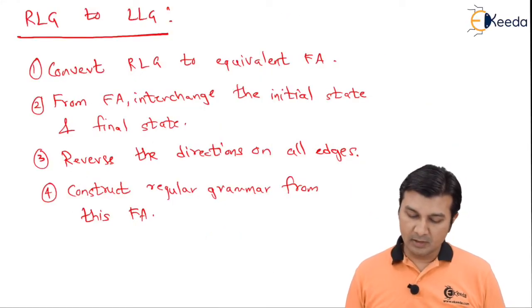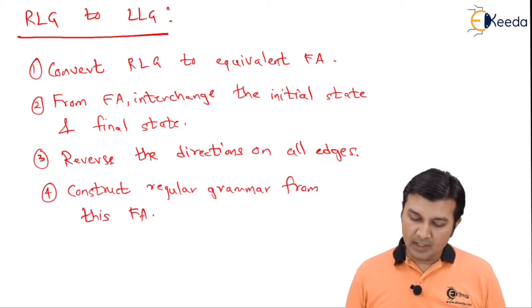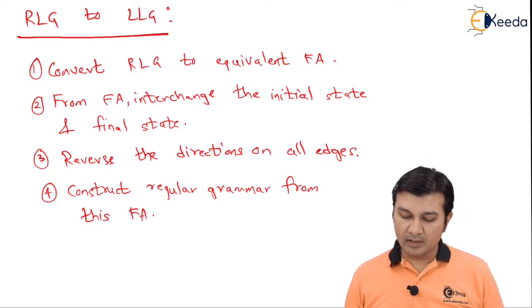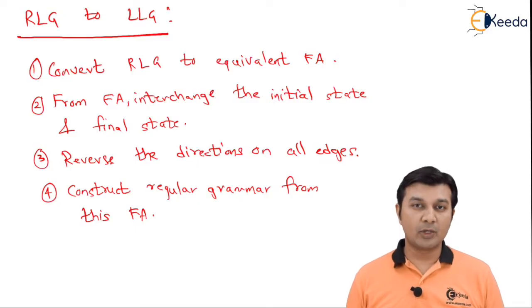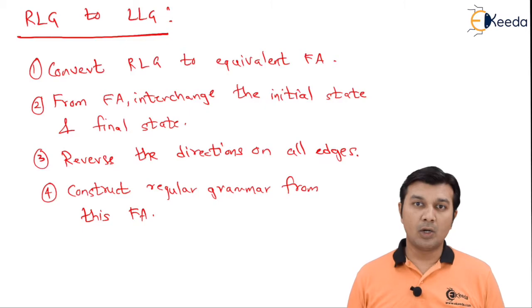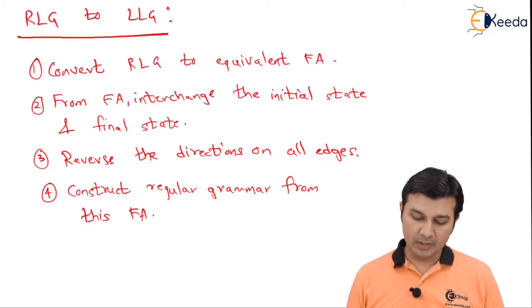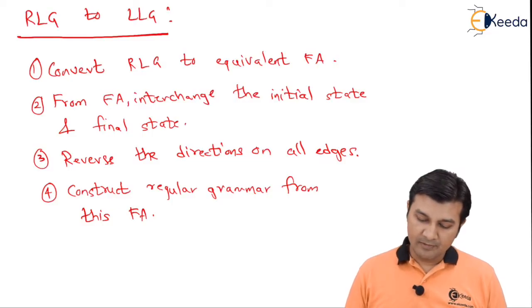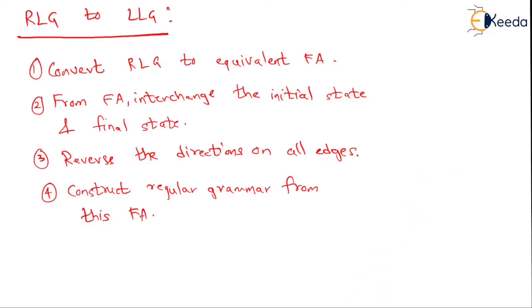If you observe the procedure to convert a RLG to LLG, the first step is to get the RLG converted into an equivalent finite automata — this we already know how to convert, we have done a lot of this type of problem in the previous videos. The next step says from this finite automata interchange the start state and the final state, reverse the direction on all the edges, and finally construct the regular grammar from this finite automata. Let us see a problem on the same.